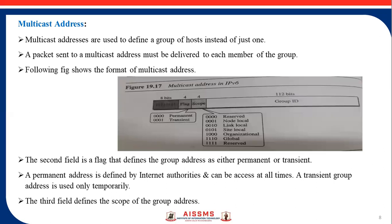Next is multicast address. Multicast addresses are used to define a group of hosts instead of just one. A packet sent to a multicast address must be delivered to each member of the group, as shown in the figure. The second field is a flag field that defines the group address as either permanent or transient. A permanent group address is defined by the internet authorities and can be accessed at all times. Transient group addresses, on the other hand, are used only temporarily — for example, systems engaged in a teleconference can use transient group addresses. The third field defines the scope of the group address, and there are many different scopes that have been defined.